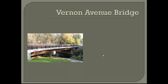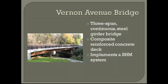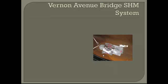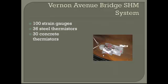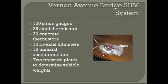One case study that was looked at in particular was the Vernon Avenue Bridge — a three-span continuous steel girder bridge with a composite reinforced concrete deck. This bridge implements a structural health monitoring system, made possible through a grant from the National Science Foundation. The data collected will be used to help civil engineers refine how future bridges are designed. The system includes 100 strain gauges, 36 steel thermistors, 30 concrete thermistors, 16 bi-axial tiltmeters, 16 uni-axial accelerometers, and two pressure plates to determine vehicle weights. Pictured on the right is a strain gauge used on one of the bridge members.